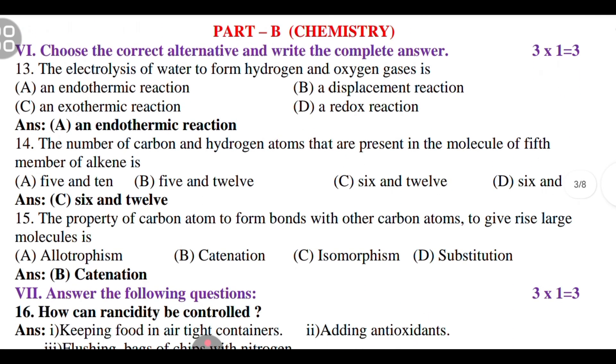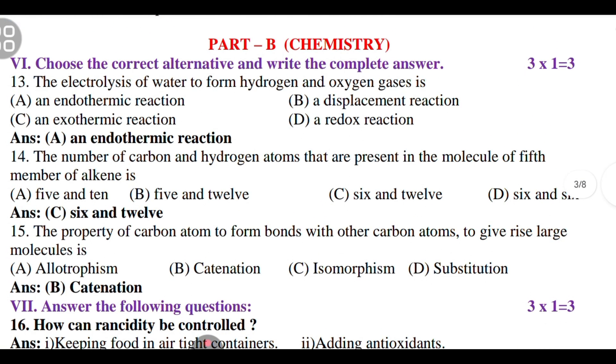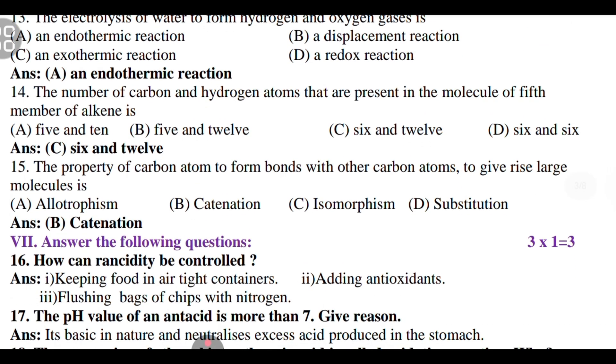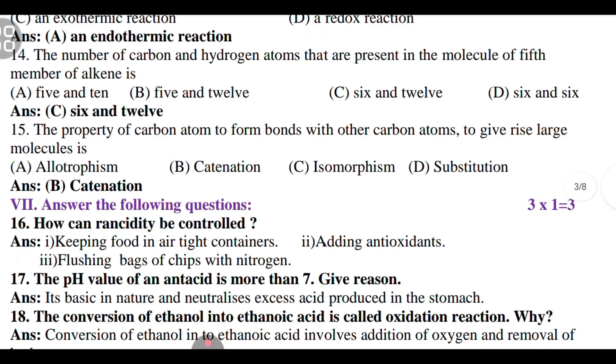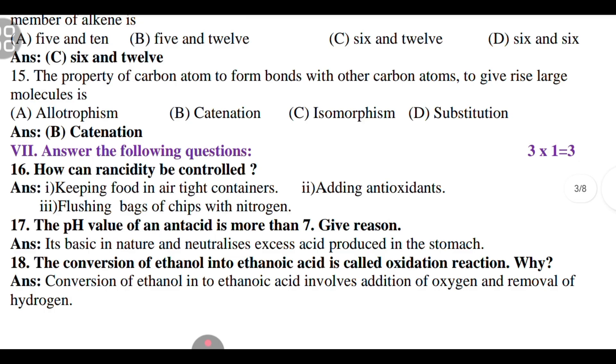Coming to the chemistry section. Sixth main, choose the correct alternative and write the complete answer. You should also write the complete answer, not writing only the option. The 13th question: the electrolysis of water to form hydrogen and oxygen gas is? Answer is an endothermic reaction. 14th: the number of carbon and hydrogen atoms that are present in the molecule of 5th member of alkane is 6 and 12. 15th: the property of carbon atom to form bonds with other carbon atoms to give rise to large molecules is catenation.